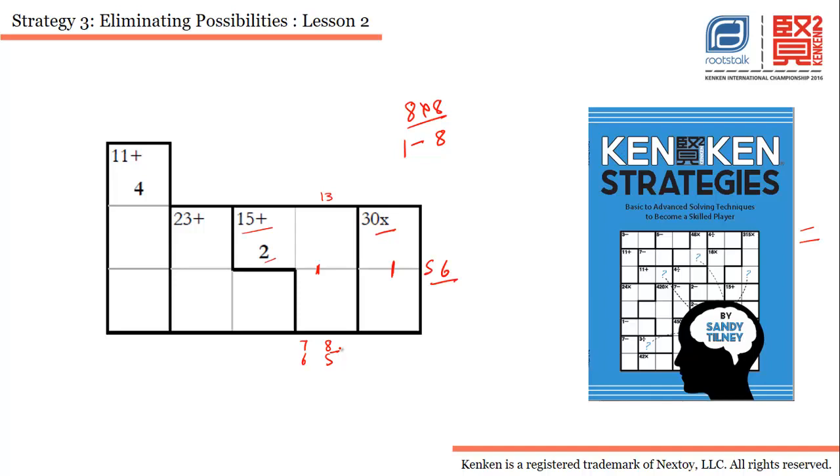Now we have this particular cage which says 23 plus, and we have three cells in two rows. The only possible combination for this is 8 plus 8 plus 7. And if we have only one possible combination which has two 8s, we know the position of each number—that is the only position possible for these numbers.